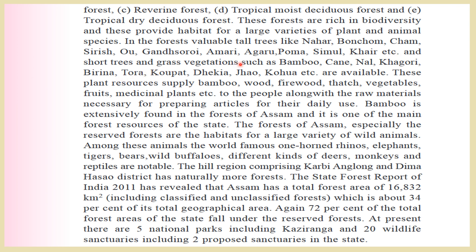There are also short trees and vegetation such as bamboo, cane, nal, kagori, birina, taura, kopat, dekya, jao, and kohuai. These are all local names of trees and vegetation familiar to Assam. These plant resources supply bamboo, wood, firewood, patch, vegetables, fruits, and medicinal plants to the people, along with raw materials for daily use articles. Bamboo is extensively found in the forests of Assam and is one of the main forest resources of the state.